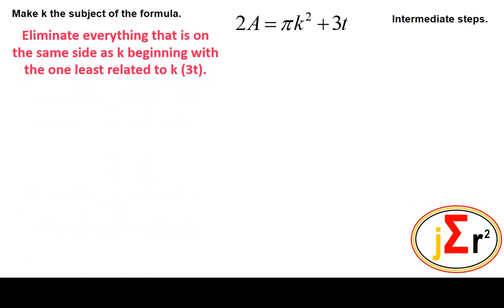We eliminate everything that is on the same side as k, beginning with the one that is least related to k. We have quite a few things to eliminate: π, 3t, and the square. The one that is furthest away logically from k is eliminated first. 3t is the one that is least related to k — it is related to the term containing k by addition.